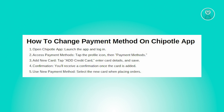First, you need to open the Chipotle app. Launch the Chipotle app on your phone and ensure you have internet access. Then enter your account credentials to log in to your Chipotle account.